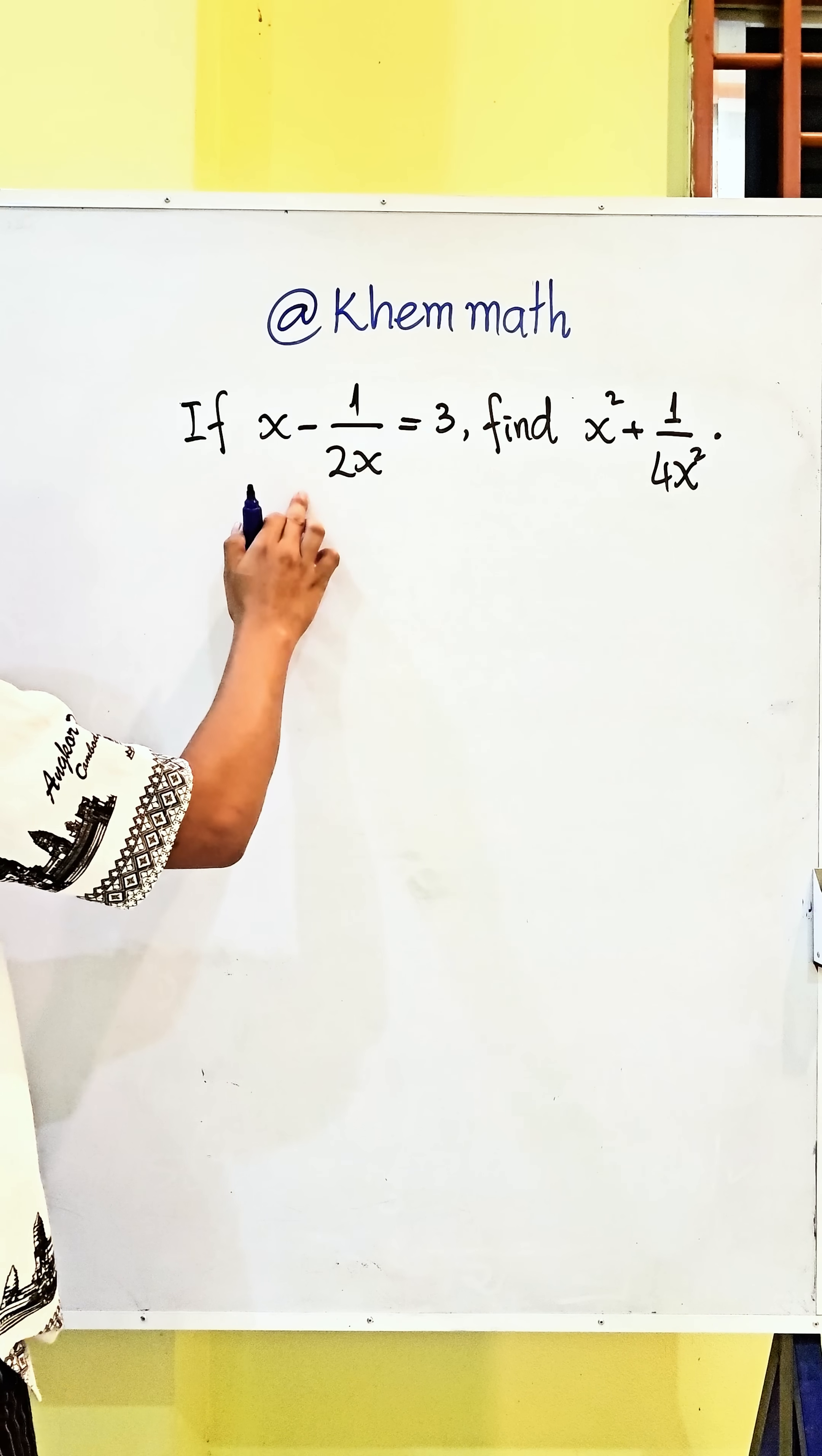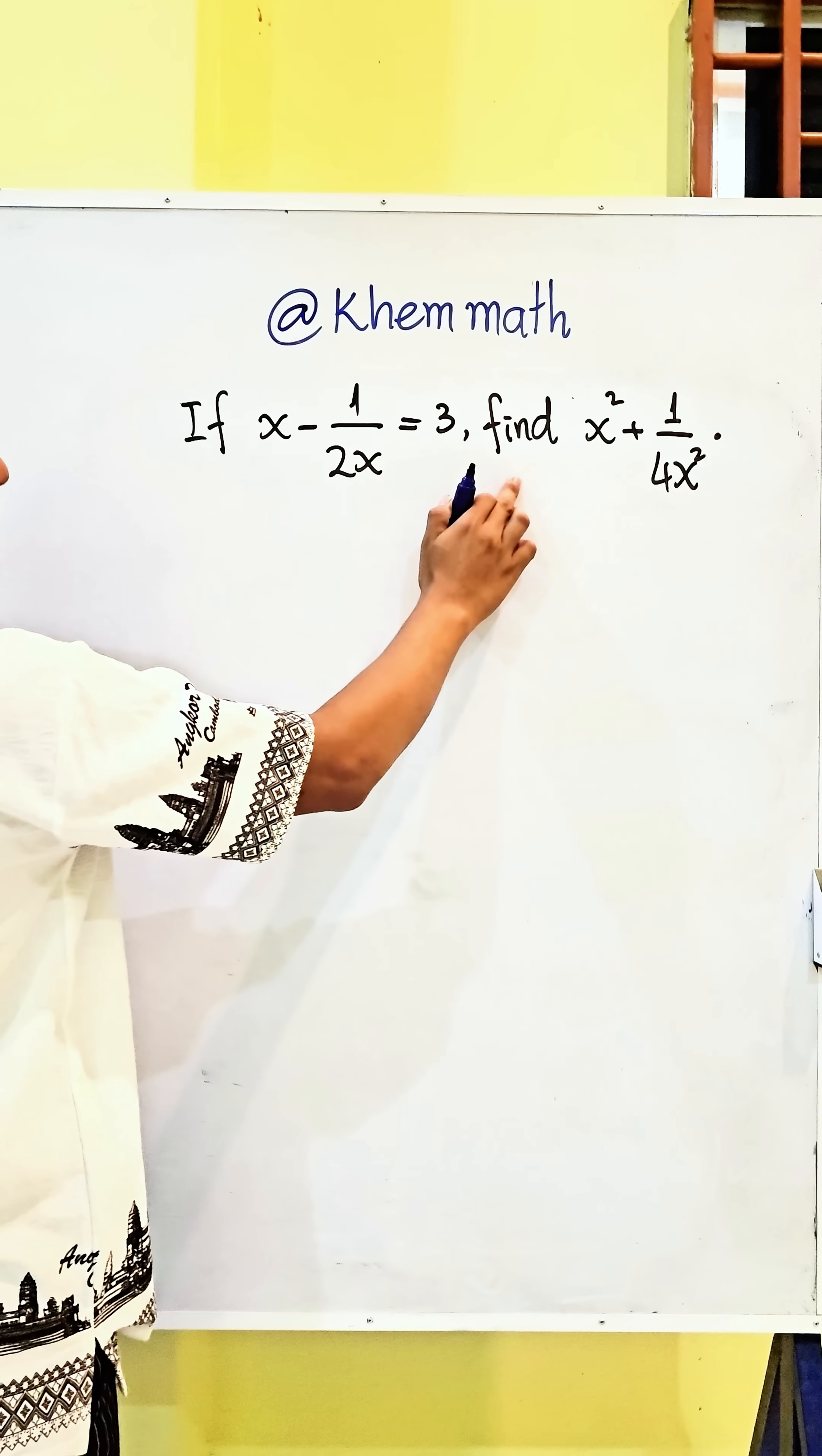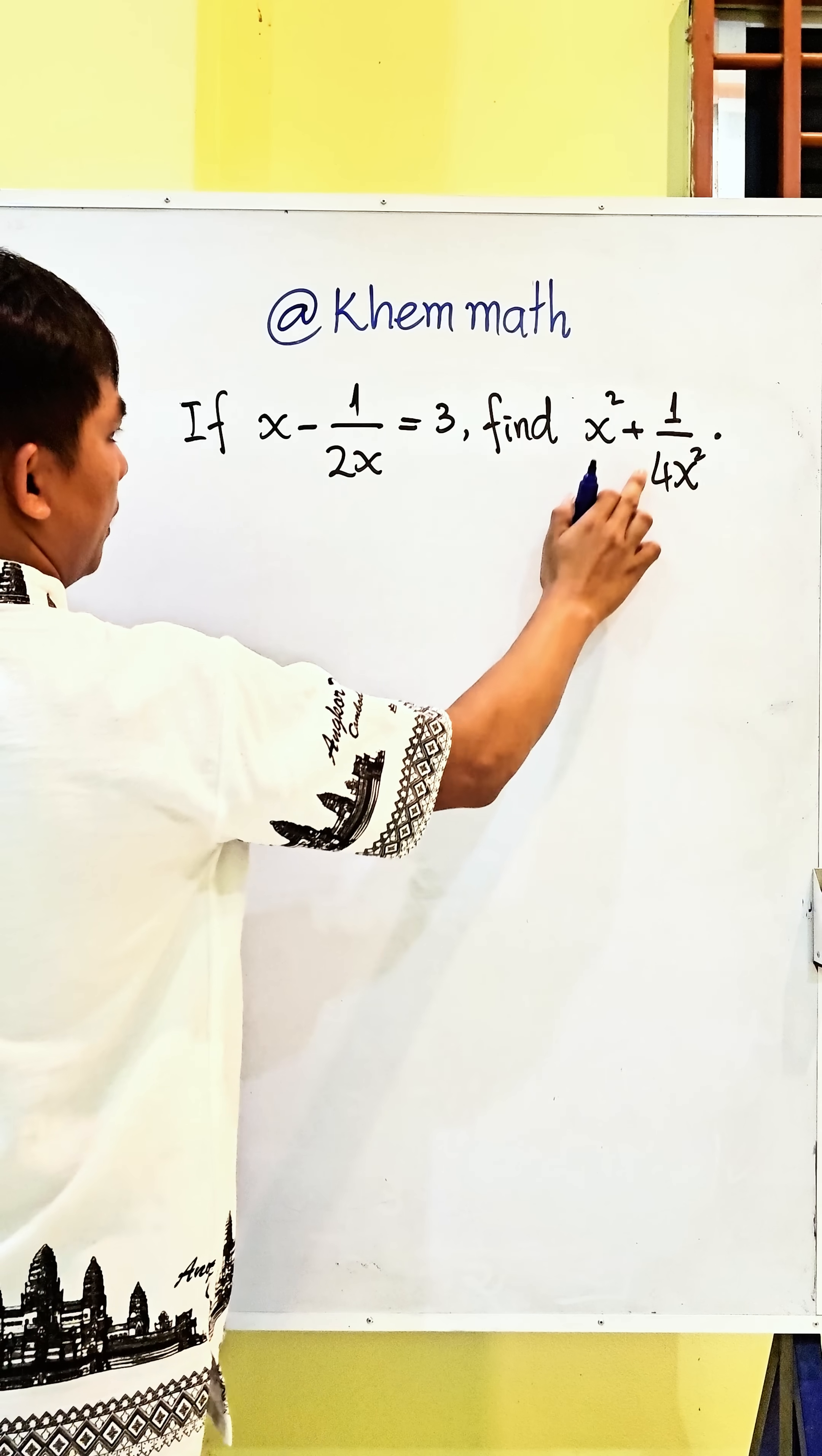If x minus 1 divided by 2x equals 3, find x squared plus 1 divided by 4x squared.